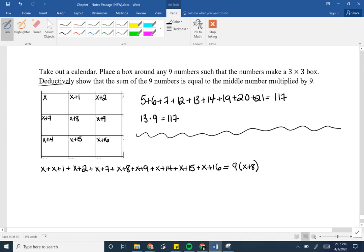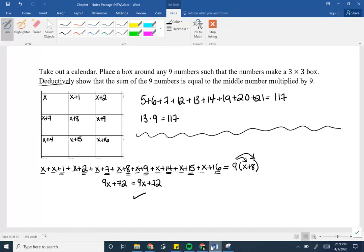The left side of this equation, we can make this look way nicer. Let's add all of our variables together and all of the numbers. So when I add the variables, I've got nine x's. So I have 9x. And then when I add up all of the constants, I get 72. On the right side, I have nine times x plus eight. So let's expand and multiply the nine into the brackets. Nine times x is 9x. Nine times eight is 72. The left side will always be equal to the right side, thus showing that the sum of the nine numbers will always be equal to the middle number multiplied by nine.